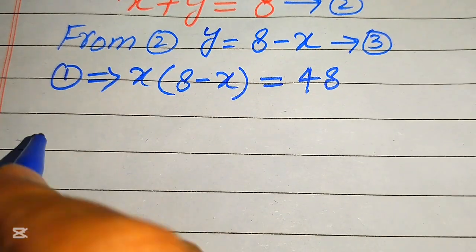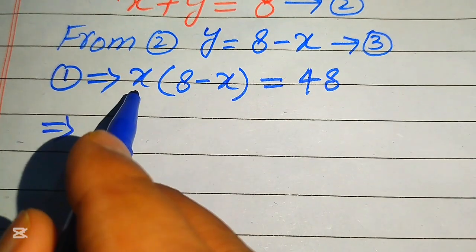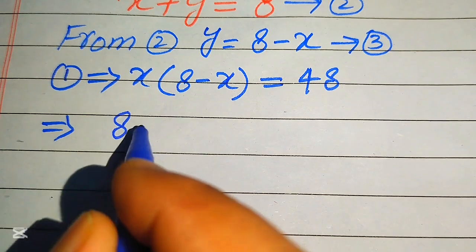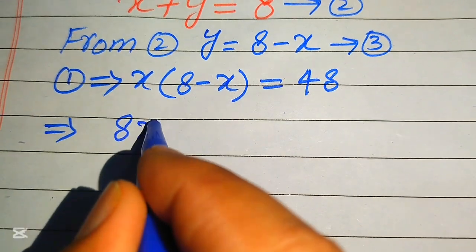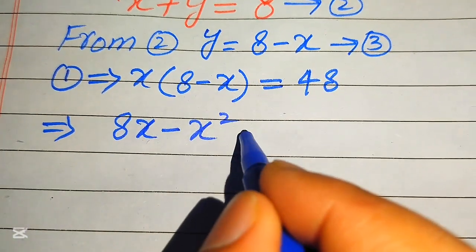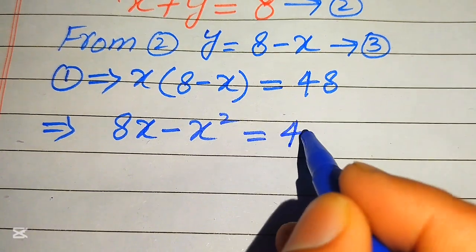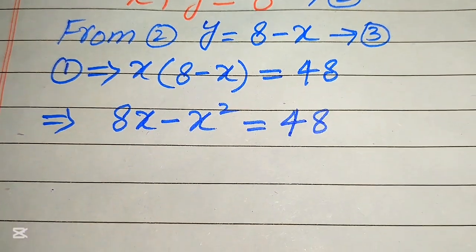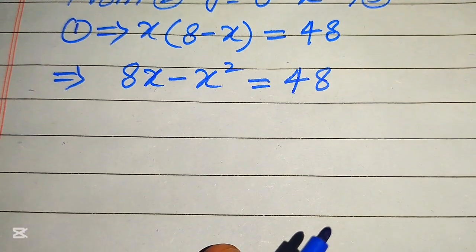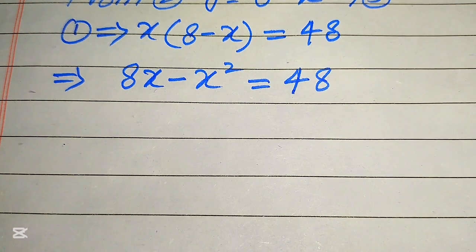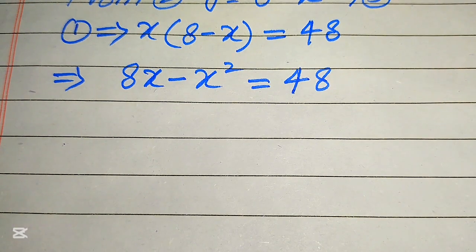In the next step we need to multiply x on both of these values, and it will be written as 8x minus x squared equals 48. Further, you see this equation will become quadratic in x variable, but not in standard form.